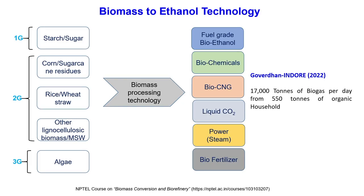Overall, we saw there are 3 different categories of fuels: 1G, 2G, and 3G fuel. For 1G, the sources are starch and sugar — the edible sources — while non-edible sources such as corn stover, sugarcane residues, rice and wheat straw, other lignocellulosic biomass, or municipal solid waste constitute 2G. The 3G ones are algae.